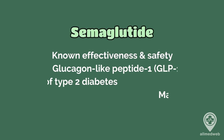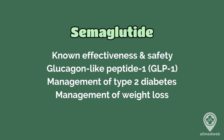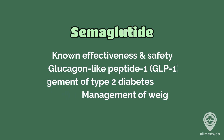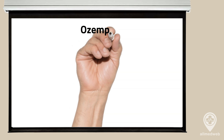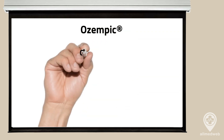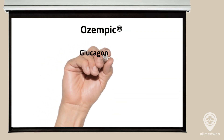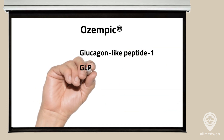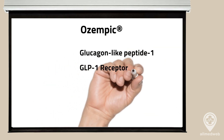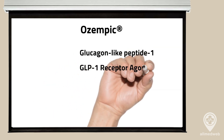Semaglutide, a primary component in Ozempic, is a prescribed medication known for its effectiveness and safety, specifically for managing type 2 diabetes and, more recently, for weight control. Ozempic belongs to a category of medication known as a glucagon-like peptide-1, or GLP-1 receptor agonist, frequently used for managing type 2 diabetes.